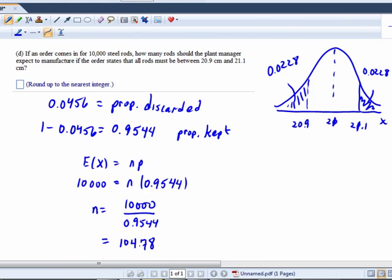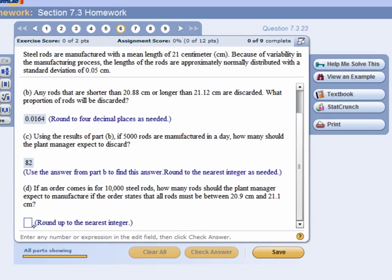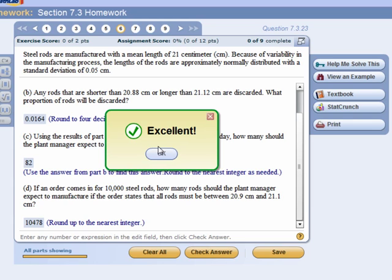So we're going to manufacture 10,478. We expect that we'll have to discard 478 so that we'll ultimately be able to deliver 10,000 steel rods. So let's see if that pans out according to the program. 10,478. Excellent, you.